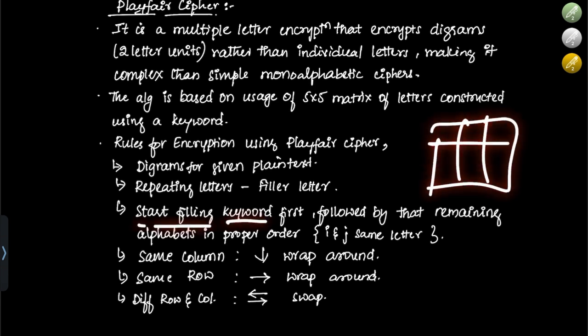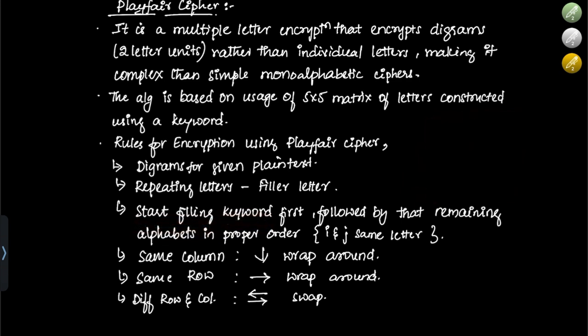In the 5×5 matrix, start by filling the keyword first, then fill the remaining alphabets in alphabetical order. One important thing: I and J are considered as one — they share the same box. This way you can accommodate all 26 alphabets in 25 boxes.